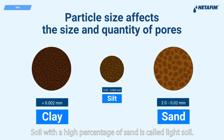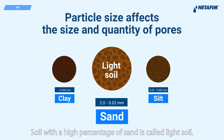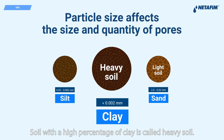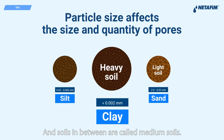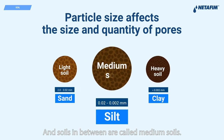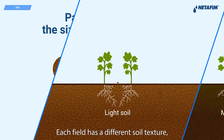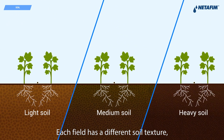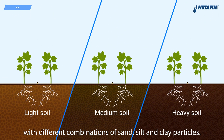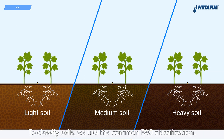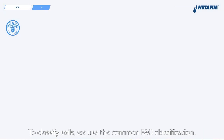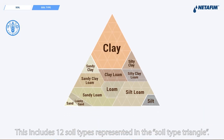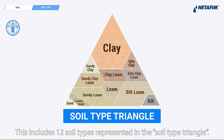Soil with a high percentage of sand is called light soil. Soil with a high percentage of clay is called heavy soil, and soils in between are called medium soils. Each field has a different soil texture with different combinations of sand, silt, and clay particles. To classify soils, we use the common FAO classification.